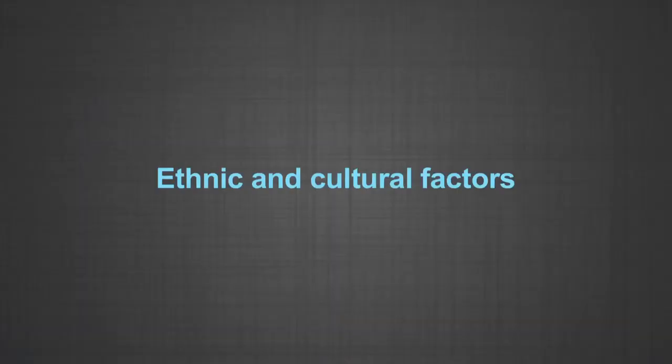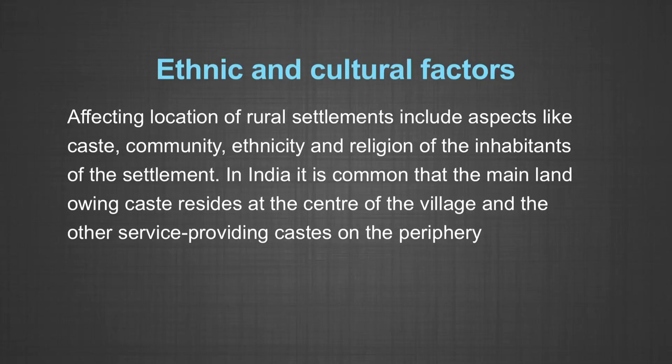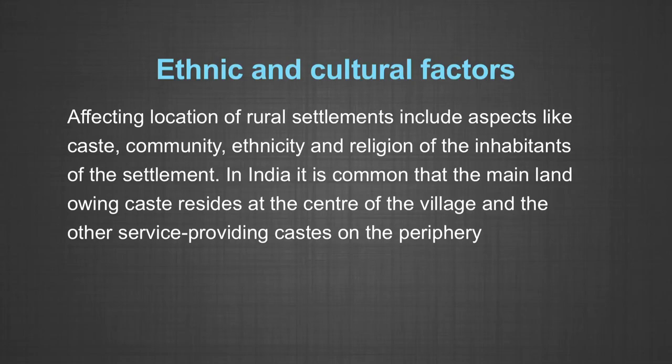In the past, border areas of the northwestern plains were attacked frequently by invaders. For a long time, apart from attacks from outsiders, there had been continuous fights between princely states and kingdoms within the country too. That is why forts in India are located on higher grounds or hills. Ethnic and cultural factors affecting the location of rural settlements include aspects like caste, community, ethnicity, and religion of the inhabitants. In India, it is common that the main land-owning castes reside at the center of the village and other service-providing castes on the periphery, leading to social segregation and fragmentation visible in the morphology of those settlements.